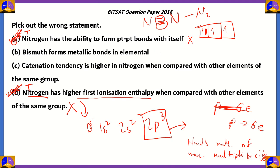Option B states that bismuth forms metallic bonds in its elemental form. Bismuth is at the very end of group 15 and has lower electronegativity, meaning it acts more electropositively with a tendency to lose electrons. When losing electrons, elements tend to form metallic bonds in their elemental form. So this statement is true, making option B not the wrong answer.